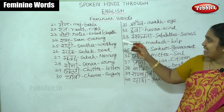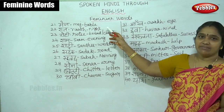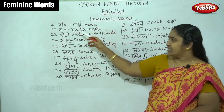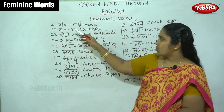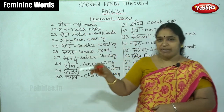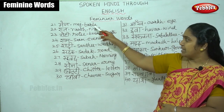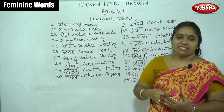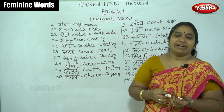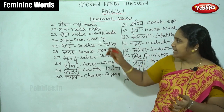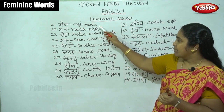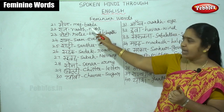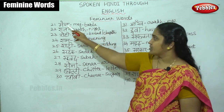Now let us see another set of feminine words. The first one is 'mage'. Mage per kalam hai means the pen is on the table. Table comes under feminine gender — mage.